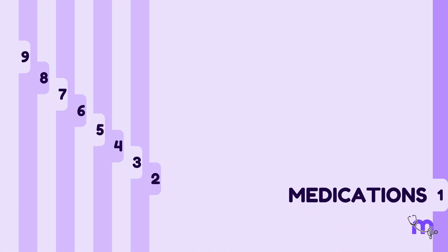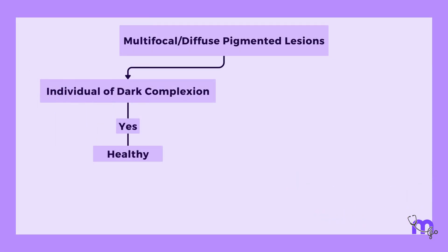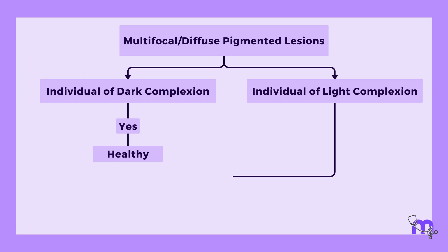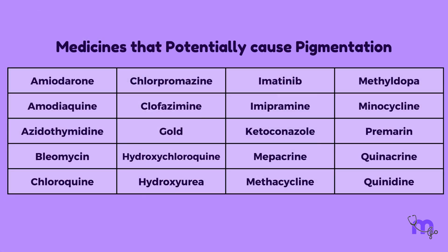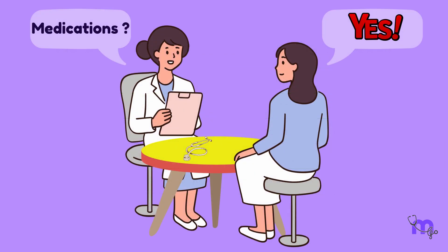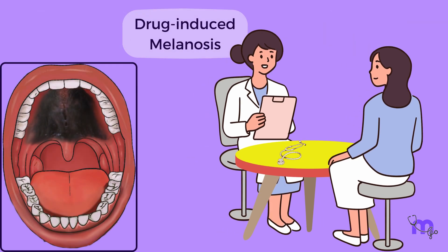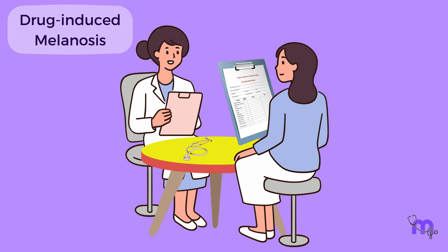The first step in evaluating patients with multifocal or diffuse pigmentation — especially those with light complexions or underlying health conditions — involves asking about their medication history. An inquiry is made about medicines known to stimulate melanin pigmentation. A table of these medicines that potentially cause pigmentation is provided — feel free to take a screenshot. If the patient acknowledges taking any such medications, it raises the possibility of drug-induced melanosis; however, a thorough evaluation and review of the patient's medical history is needed to confirm this diagnosis.